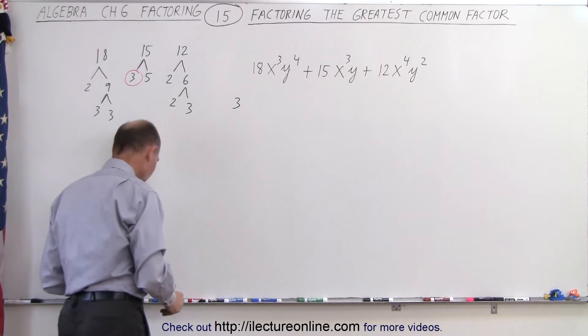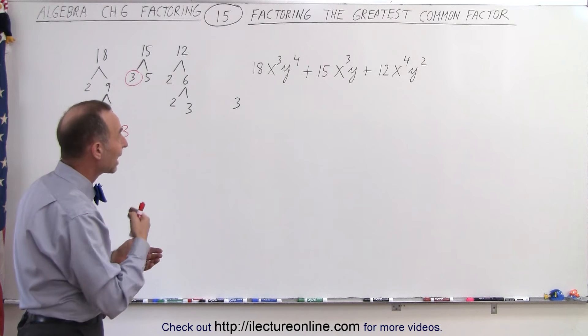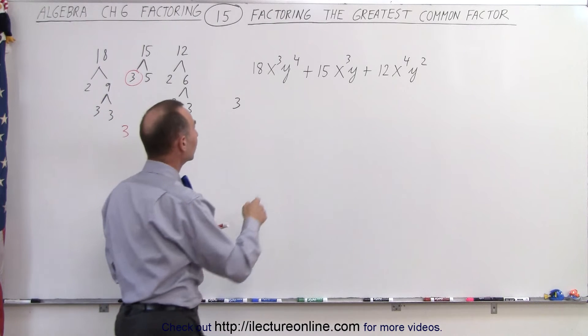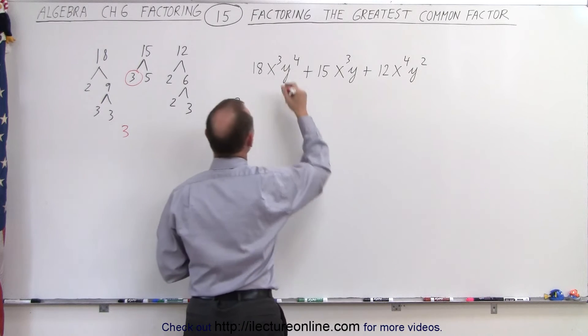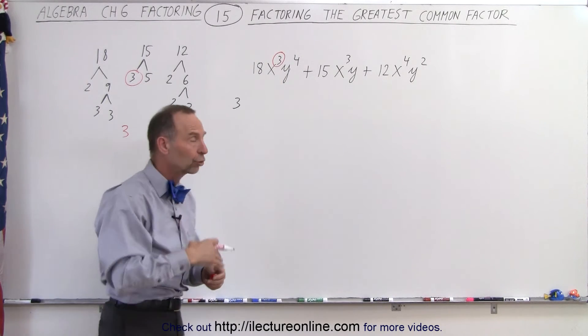What about the variable portions? We have an x and a y. What we want to do is find the x and the y with the smallest exponent. So starting with x, we have an x cubed, we have an x cubed, and we have an x to the fourth power. So the smallest exponent is 3, which means we can pull out an x cubed.